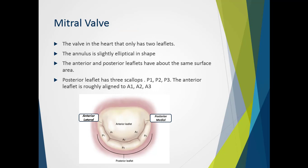The mitral valve is the only valve in the heart that has two leaflets. The annulus is slightly elliptical in shape and if viewed side-on, it actually appears saddle-shaped. The anterior and posterior leaflets both have about the same surface area. However, the anterior leaflet holds a much smaller portion of the annulus circumference. The posterior leaflet has three scallops or sails: a lateral, middle, and medial — also known as P1, P2, and P3.